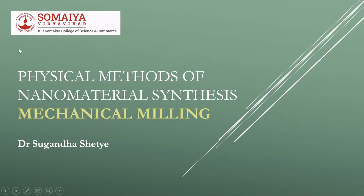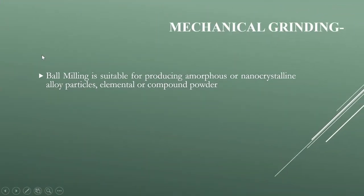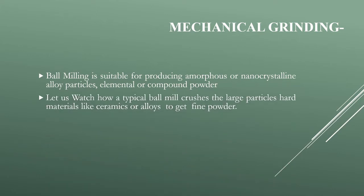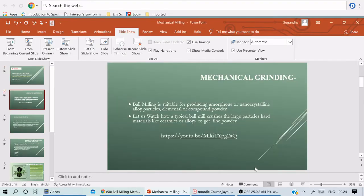Let us learn the most simplest and popular physical method of nanomaterial synthesis — mechanical milling. Mechanical milling is done using ball milling for producing amorphous or nanocrystalline alloy particles, elemental or compound powder. Let's watch how a typical ball mill crushes the large particles of hard ceramics or alloys to get fine powder.